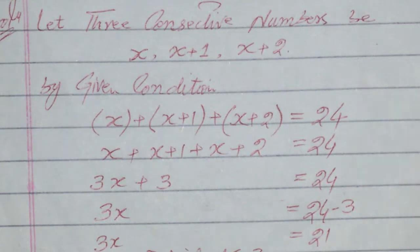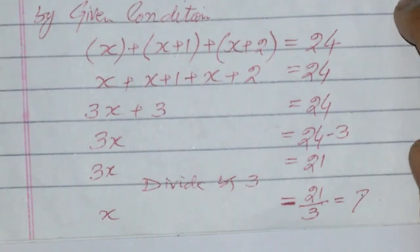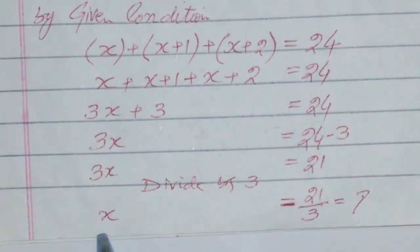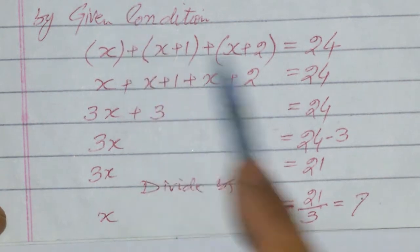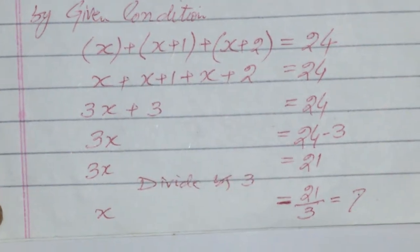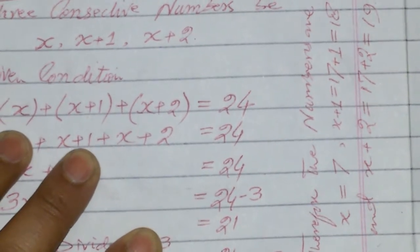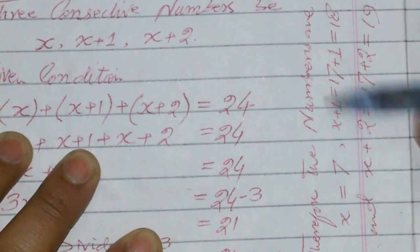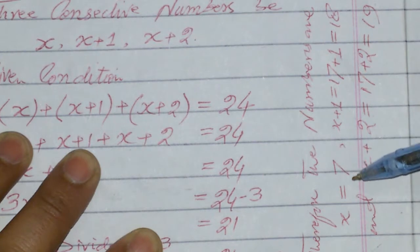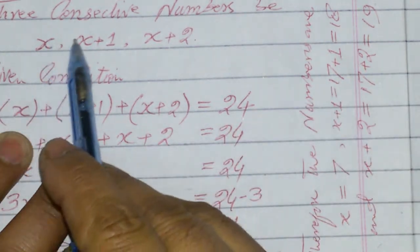Now calculate the value of x. From the equation 3x equals 21, dividing both sides by 3, we get x equals 7. Now we can find the numbers.